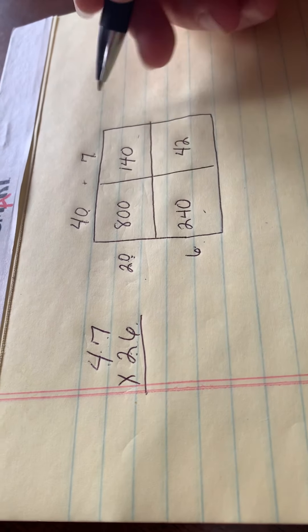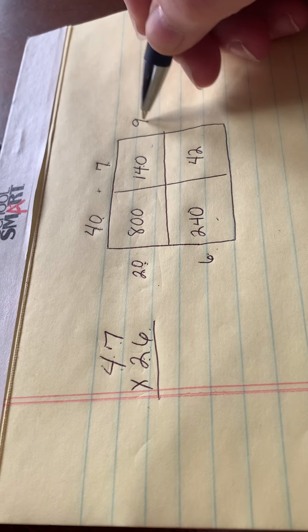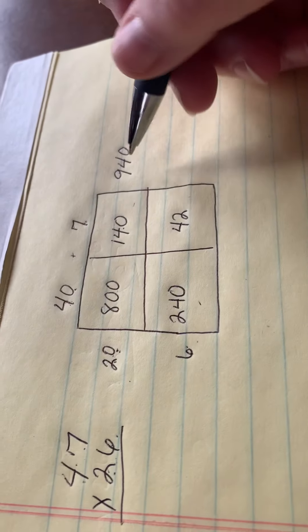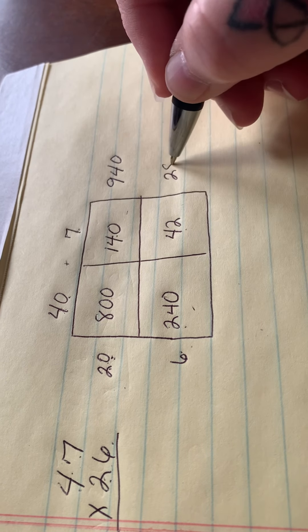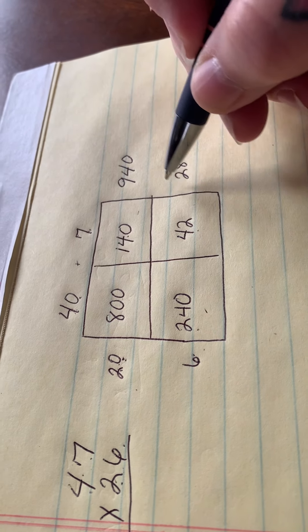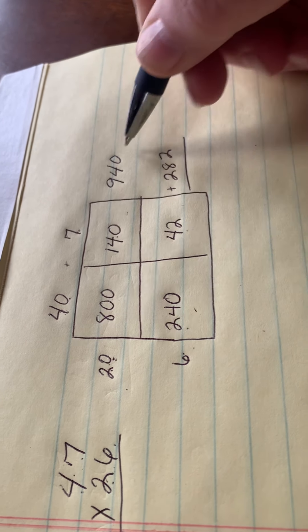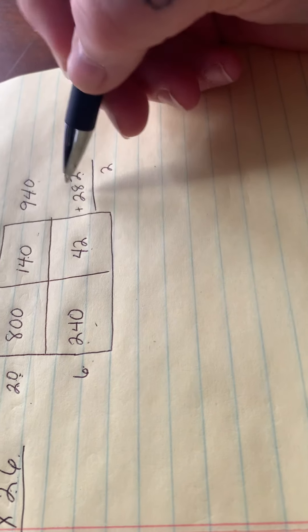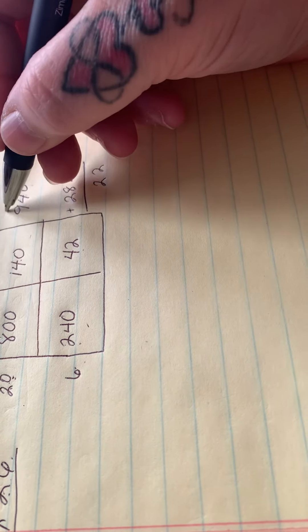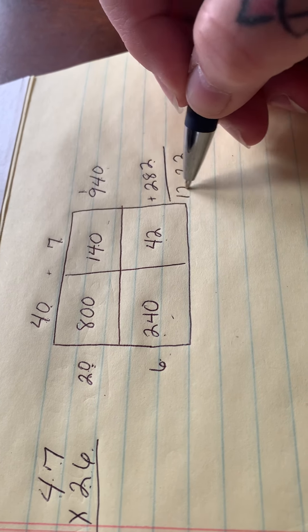Now we can add it. So let's add 800 plus 140. We get 940. 240 plus 42 is 282. Now when we add these two numbers, we get 0 plus 2 is 2, 4 plus 8 is 12, carry your 1. 1 plus 9 is 10 plus 2, 12.